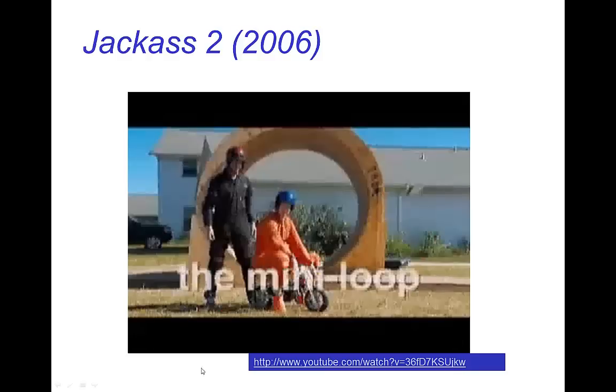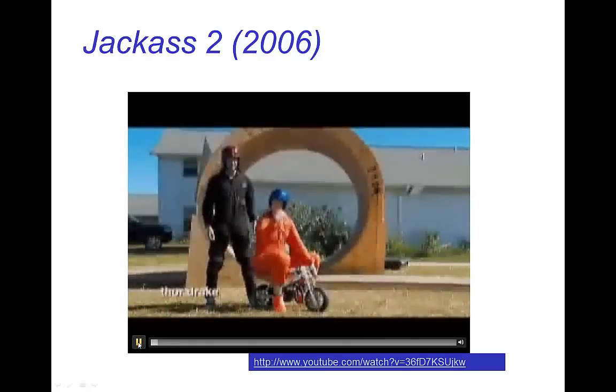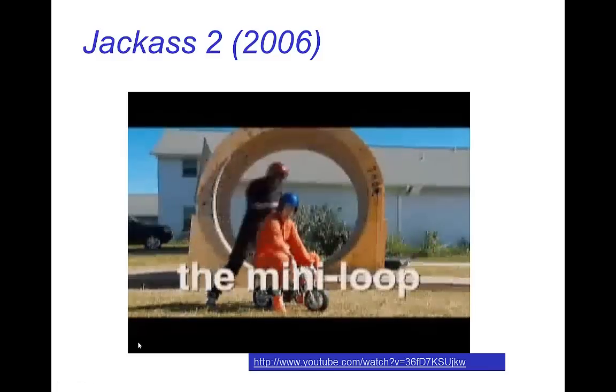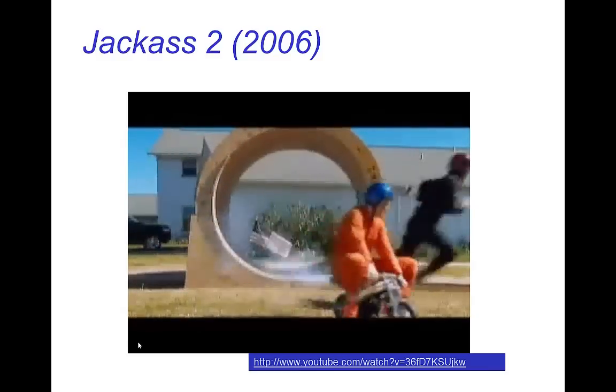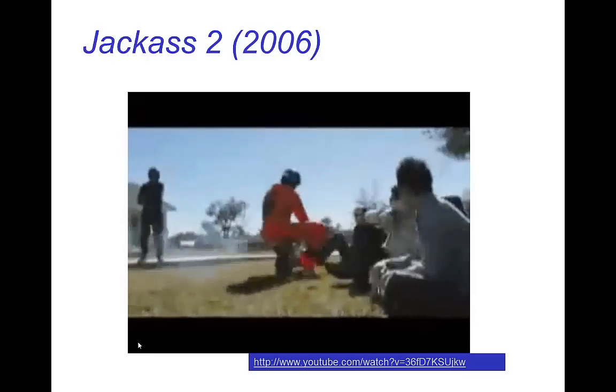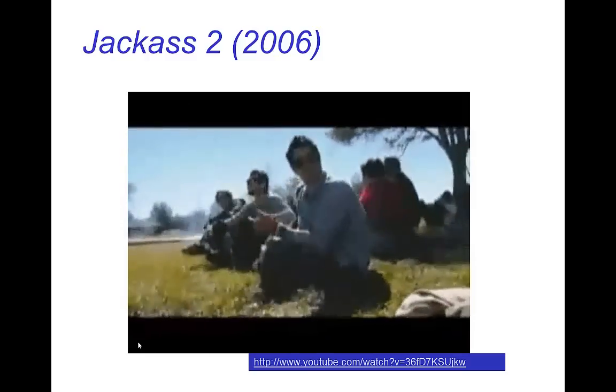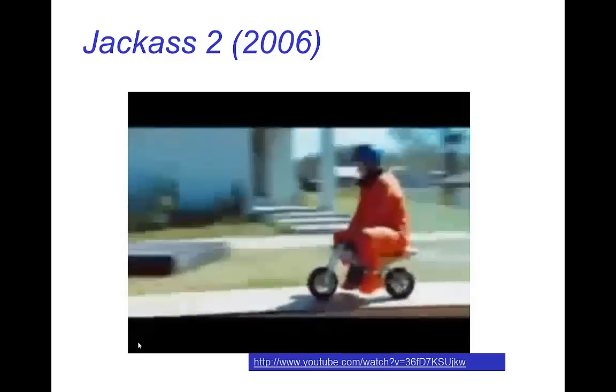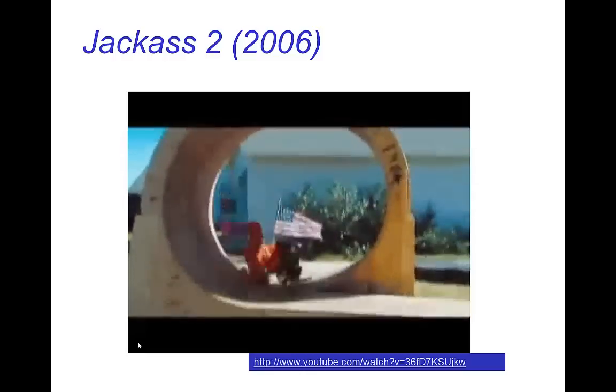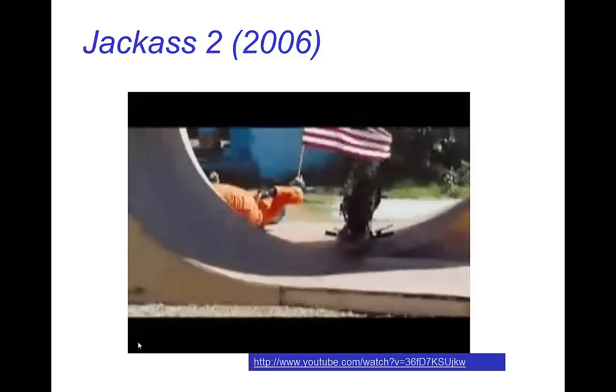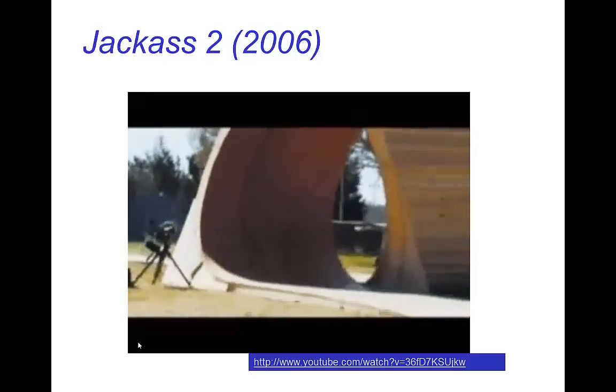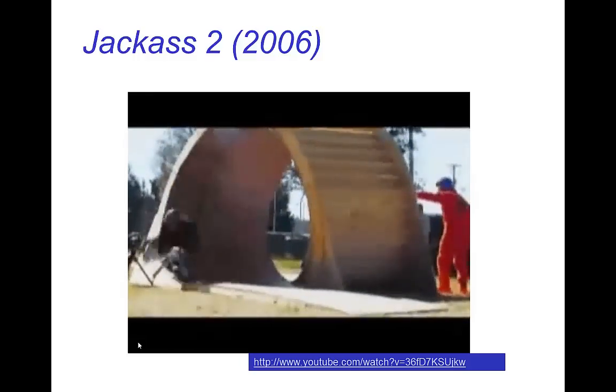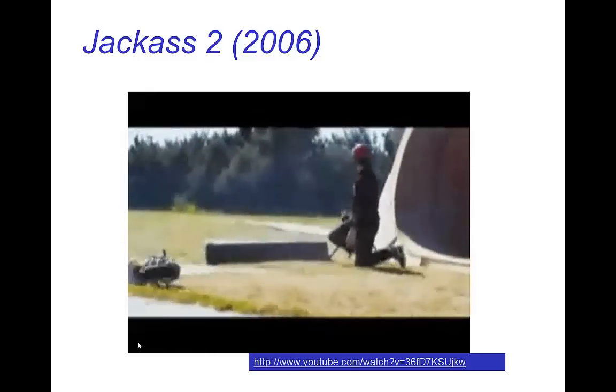Let's see this in an example from Jackass 2. They're going to ride these motorcycles and go on this mini-loop. These motorcycles don't go very fast and because of that, the radius has to be small. That was not successful. Let's try that again. That was almost, almost did it.